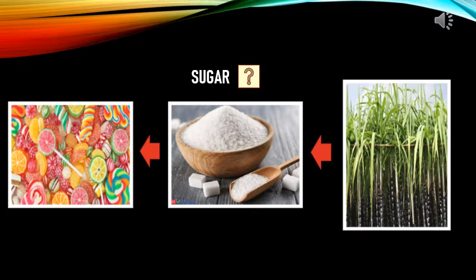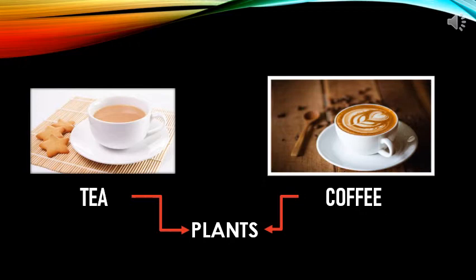Tell me, do you like sweets? I know all of us like sweet things. But from where does sugar come from? We get sugar from the sugar cane plant. Similarly, tea and coffee also we get from plants only.